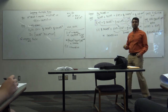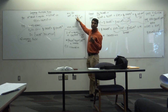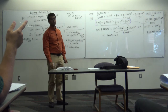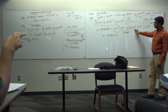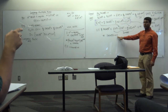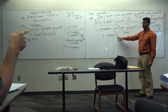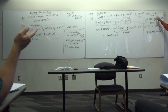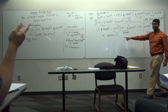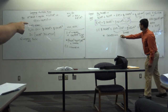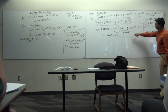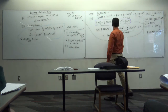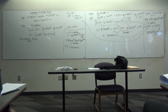Since α > 0, we conclude ‖x̄ - x*‖² = 0, so x̄ = x*. This means every limit point of the bounded sequence x_k* equals x*, so by Lemma 2 the full sequence x_k* converges to x*. We have proved that x_k* converges to x*, the optimal solution to the original problem.